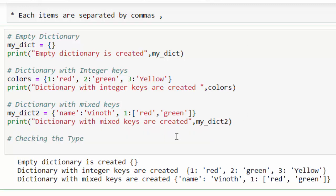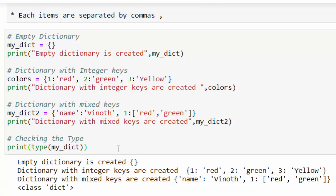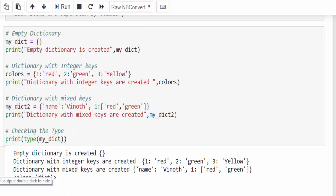If you want to check the data type of your variable, print type and pass the variable name. Just run it. You will get class as dict, which means this particular variable is dictionary. This is how we create dictionary variables. Hope you got an idea about it.